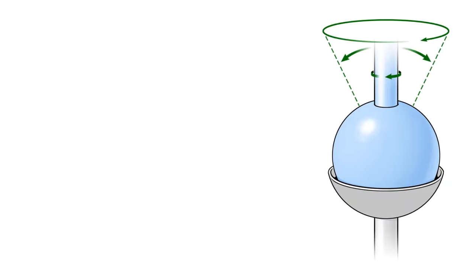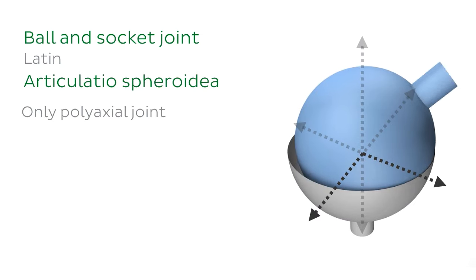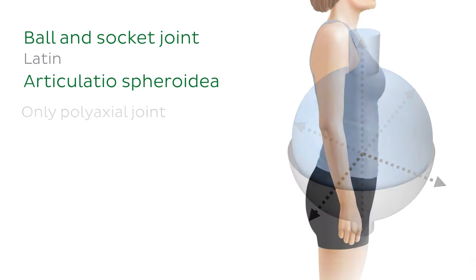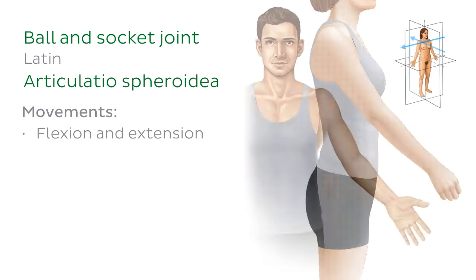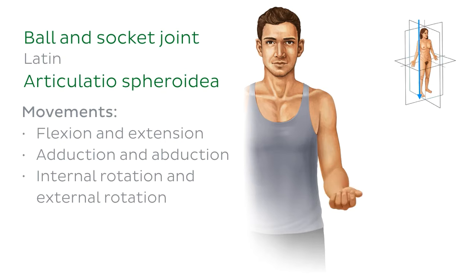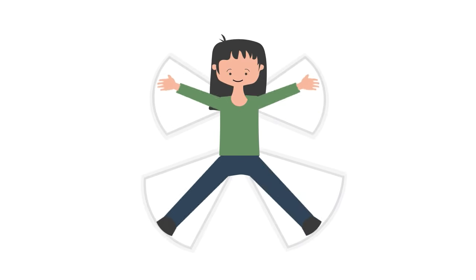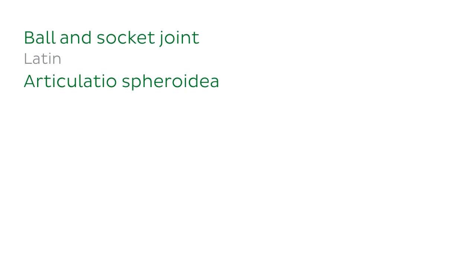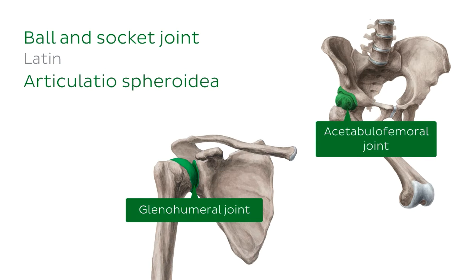Time to take a closer look at the most common type of joint in the human body, the synovial joint. Let's start with the ball and socket joint, also known as the spheroid joint. This is the only polyaxial joint and therefore the most mobile of all joint types. The movements that occur at these joints are flexion and extension, which occur around a frontal axis; adduction and abduction, which occur around a sagittal axis; and internal rotation and external rotation, which occur around a vertical axis. Ball and socket joints are useful when you want to play in the snow and make a snow angel. Two examples are the acetabulofemoral joint, or hip joint, and the glenohumeral joint, or shoulder joint, which is shown here.